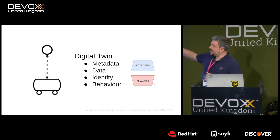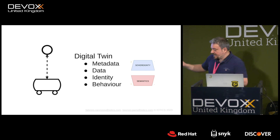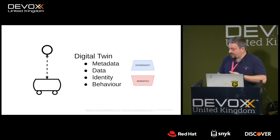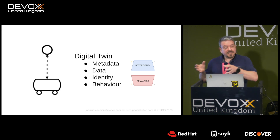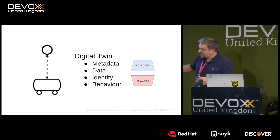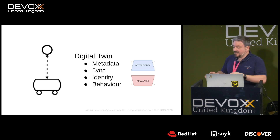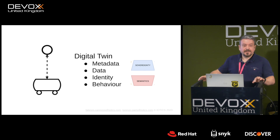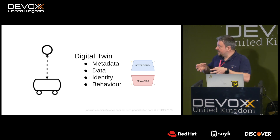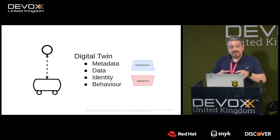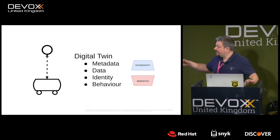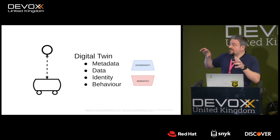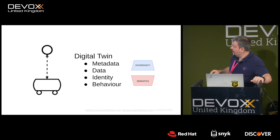A digital twin of a car is a virtual representation in the overlay combining: metadata — data about the device such as model, brand, manufacturer; data — the internal runtime status like speed or distance from an obstacle; identity — uniquely identifying the device across the environment; and behavior — translating what the physical world is into whatever manages the digital twin's status.